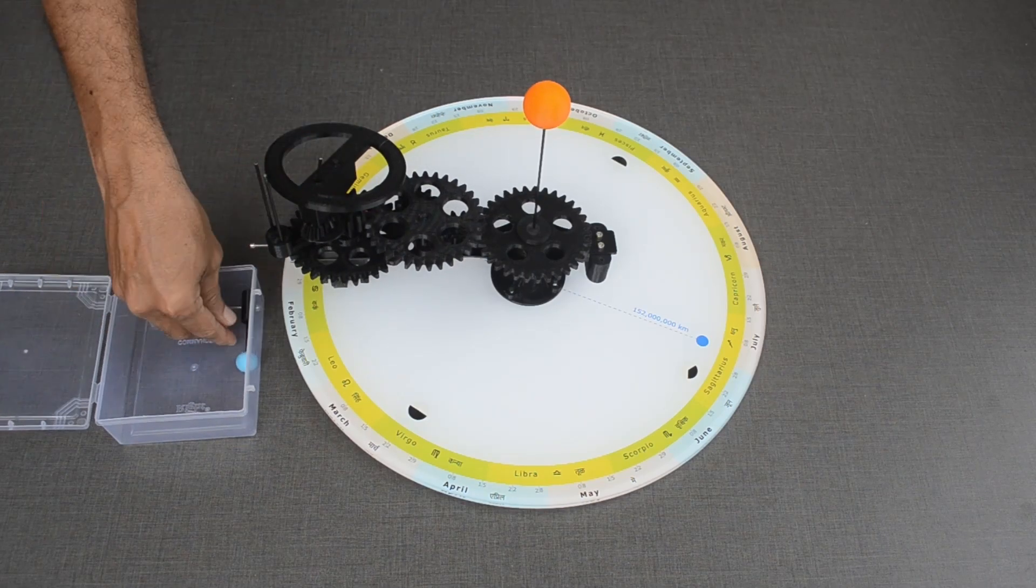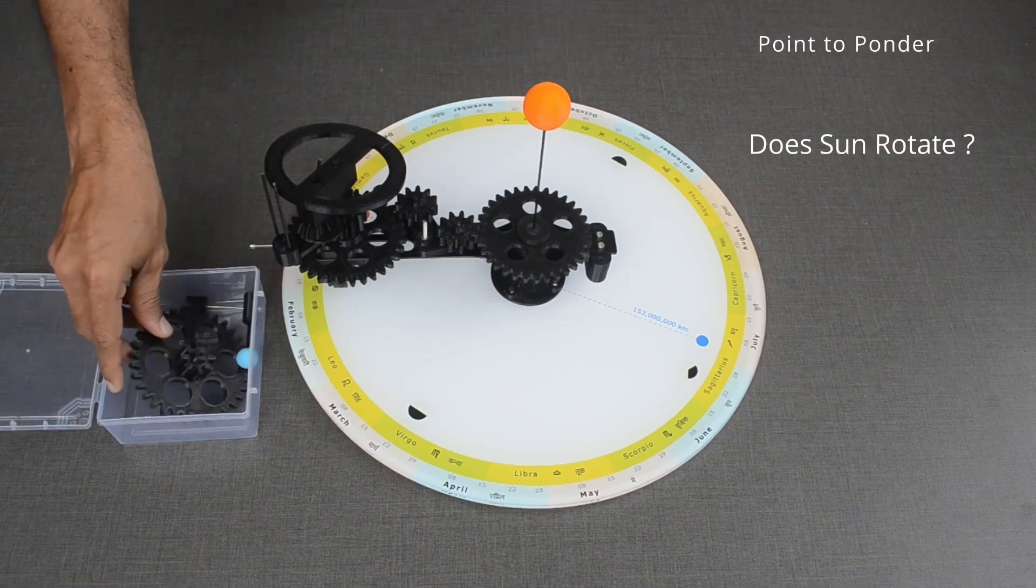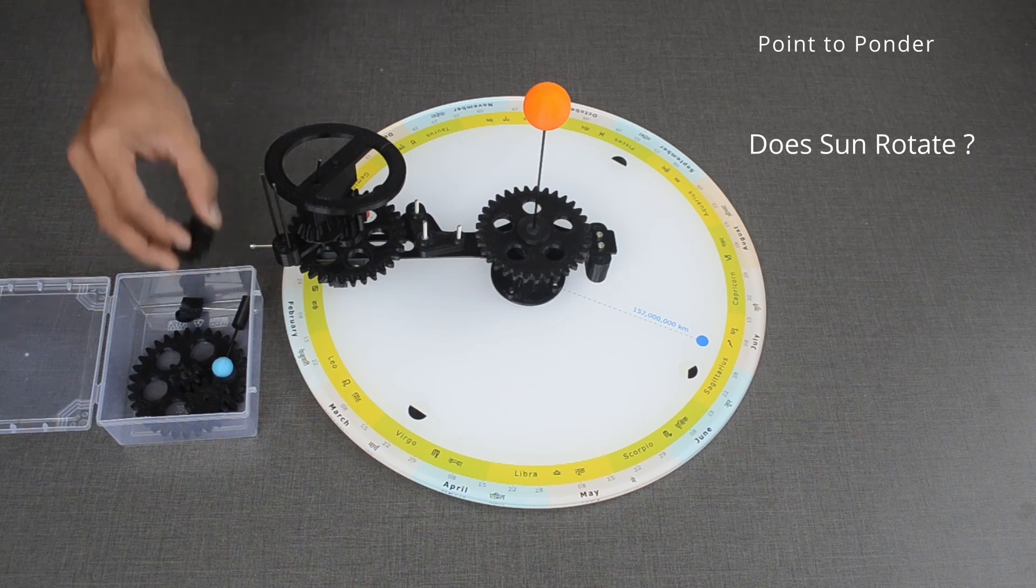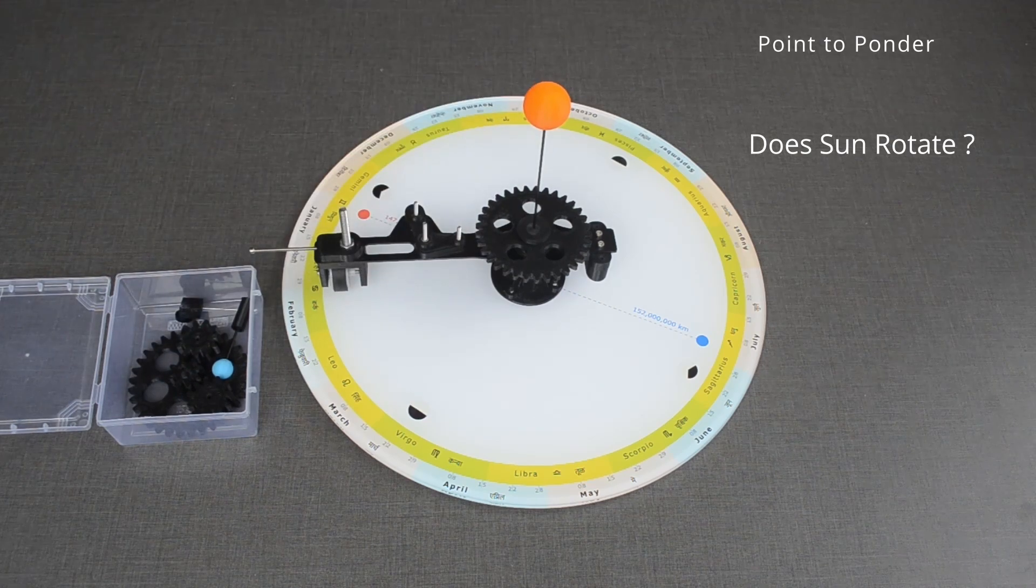Now, here are some points to ponder. In the model, sun is shown as stationary object. Is it really the case? Do find out.